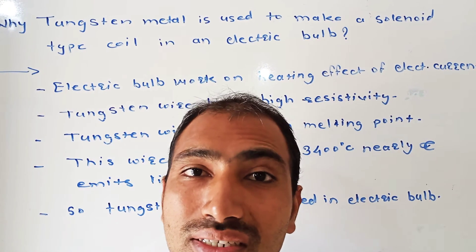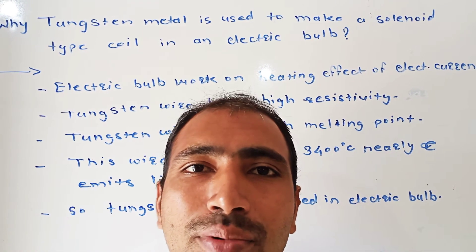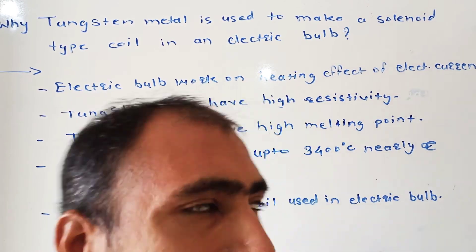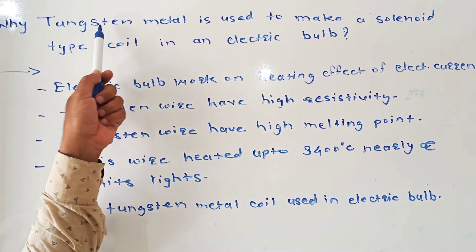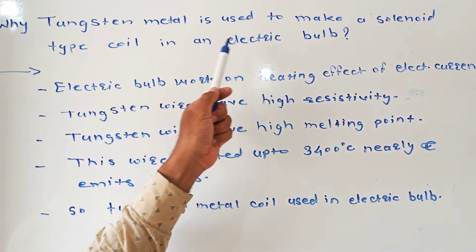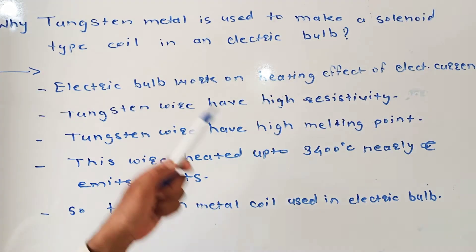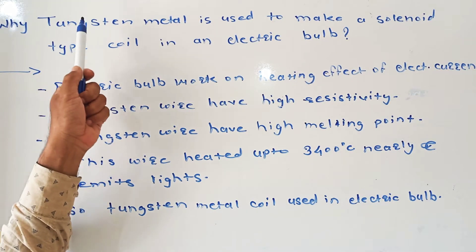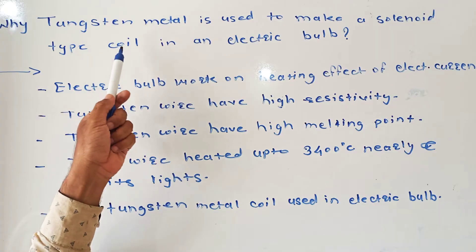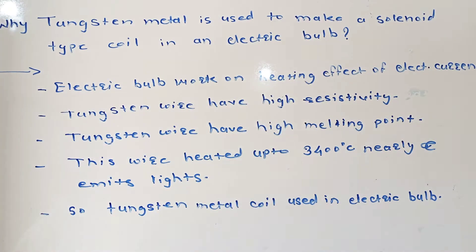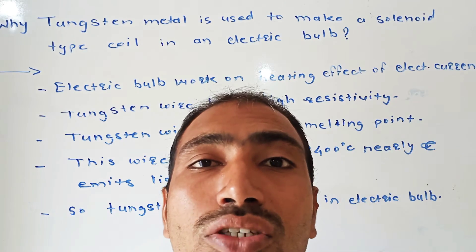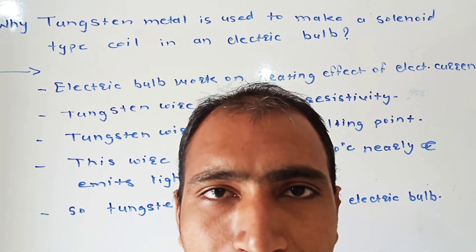Hello students, I am Suraajpur, Christian classes, Usmanabad. In today's lecture, we have seen page number 49's point: Why tungsten metal is used to make a solenoid type coil in an electric bulb? This question is asked for 2 marks in March 2019's question paper.